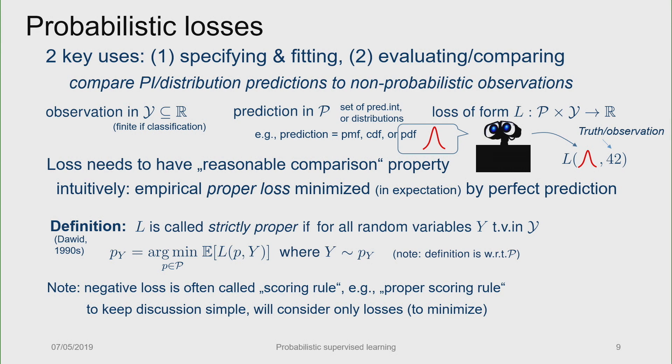Okay, so one terminological issue, you may have heard the term proper scoring rule, that's just with the sign flipped, but I'm talking about losses because I think being familiar with scikit-learn, you might be more familiar with losses than with scores in general, even though this is just a matter of choice of sign. Any questions about this?